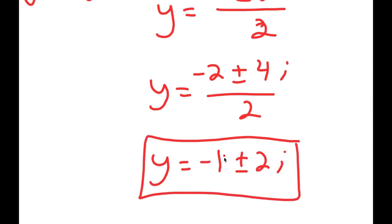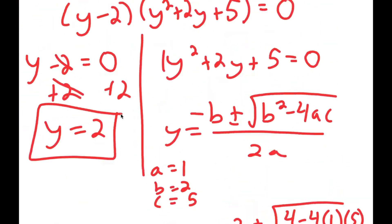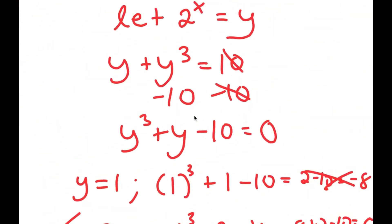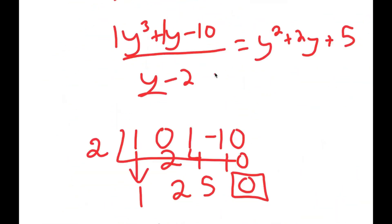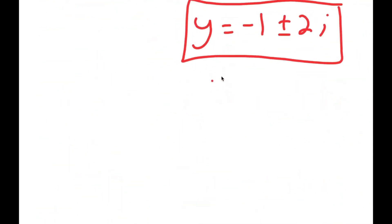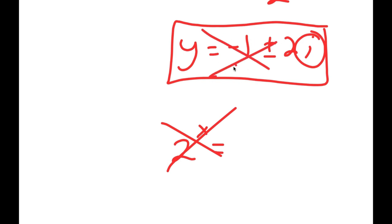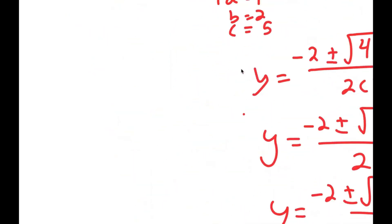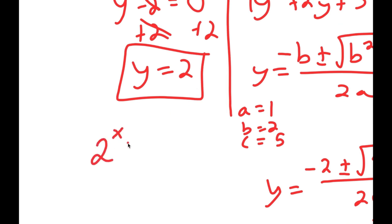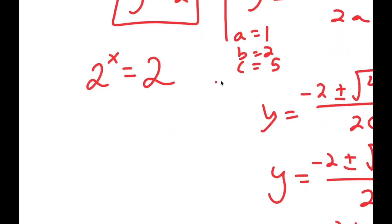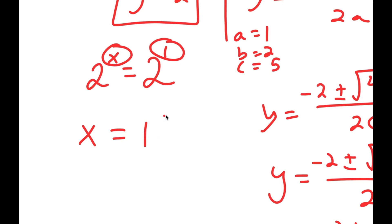These are two more solutions of y, giving three total. But remember, we let 2 to the power of x equal y. 2 to the power of x cannot equal an imaginary number, meaning those complex solutions are not valid. My only valid equation is 2 to the power of x equals positive 2. I can rewrite 2 as 2 to the power of 1, and since these two exponents equal each other, x is equal to 1. So x equals 1 is my solution for this problem.